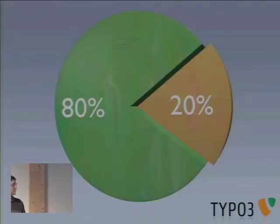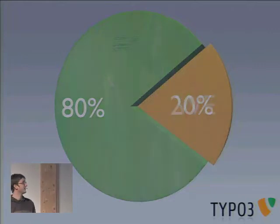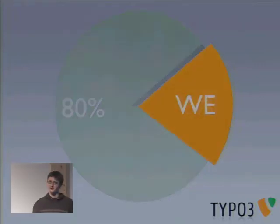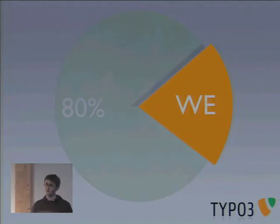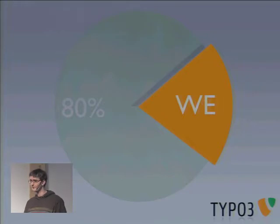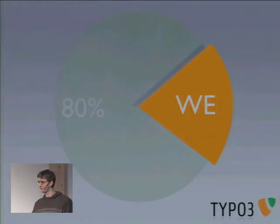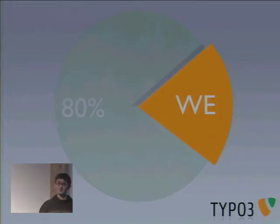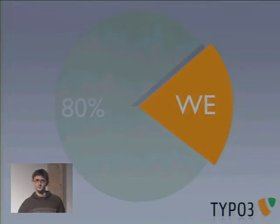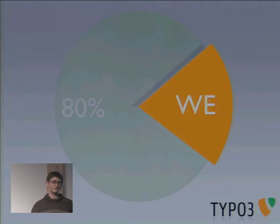Looking back at the chart, the 20% that are missing — it's not the top core team, it's us, it's we. We want to make a good 4.4 version, we want to have a great release with all the future-proof extensions. We also want to have a common view, a common perspective on this release, and it's something we all should work on together.